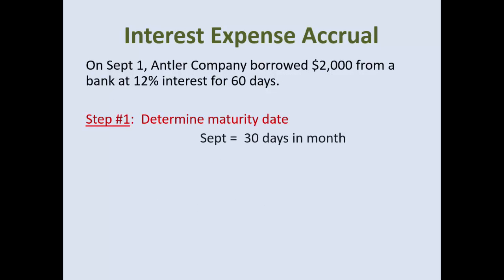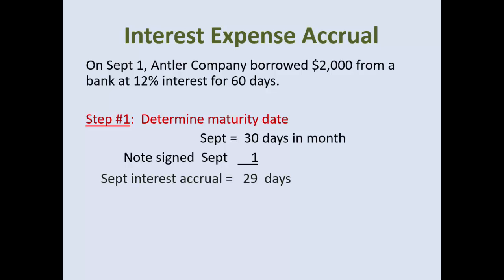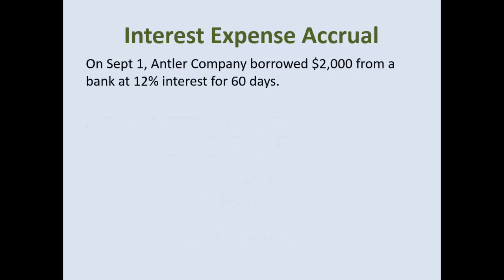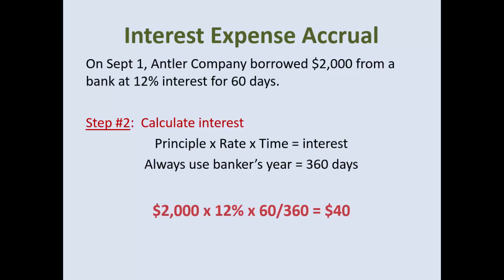Determine the maturity date. September has 30 days, but you're not going to count today — one day of interest accrual is tomorrow. You take out the note today, you don't immediately owe interest. So September interest accrual is 29 days. October has 31 days, so maturity date is October 31st. Then calculate your interest using the banker's year: $2,000 times 12% times 60 over 360 equals $40.